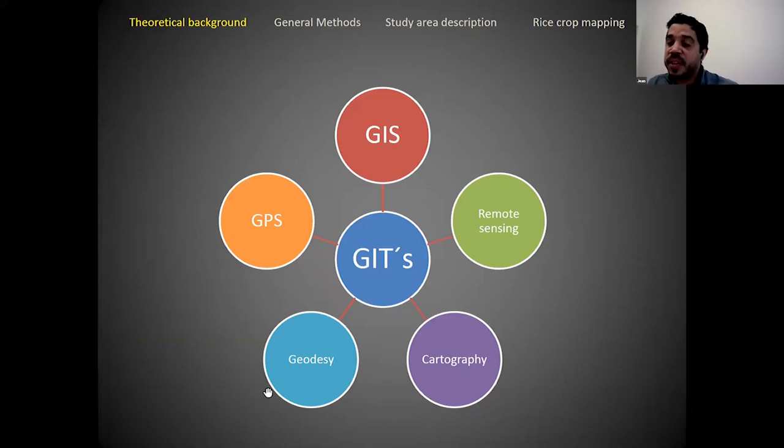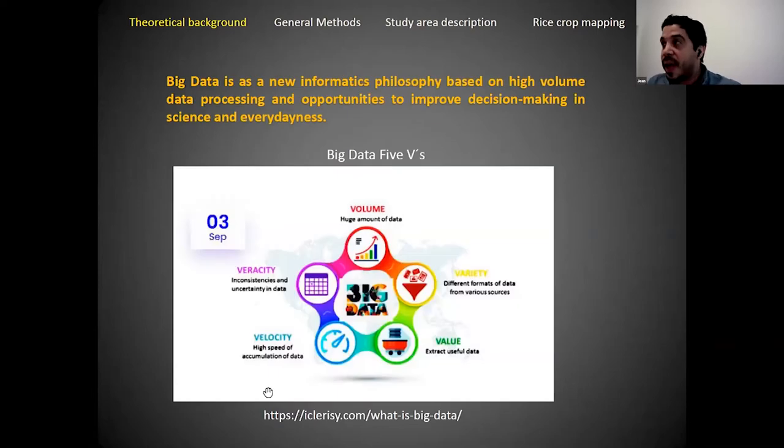Geographic information technologies include GIS, remote sensing, cartography, geodesy, and GPS. By another hand, we have a new method: big data is a new informatics philosophy based on high volume data processing and opportunities to improve decision-making in science and everydayness.